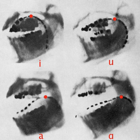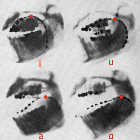The International Phonetic Alphabet is an alphabetic system of phonetic notation based primarily on the Latin alphabet. It was devised by the International Phonetic Association in the late 19th century as a standardized representation of the sounds of spoken language.